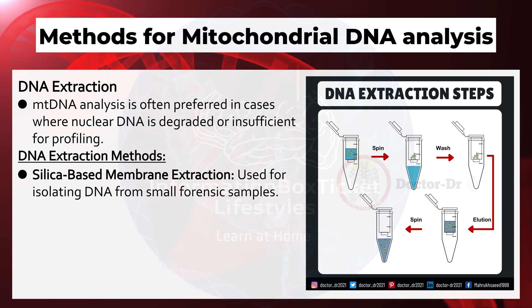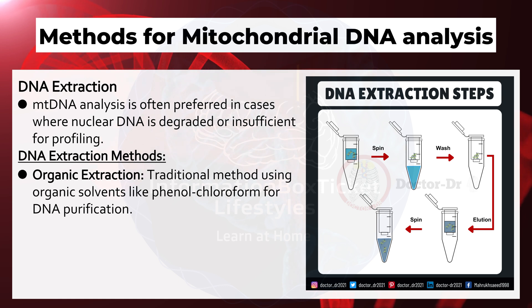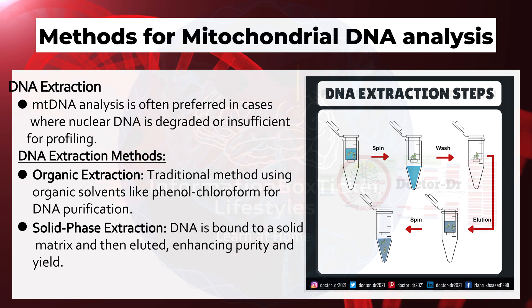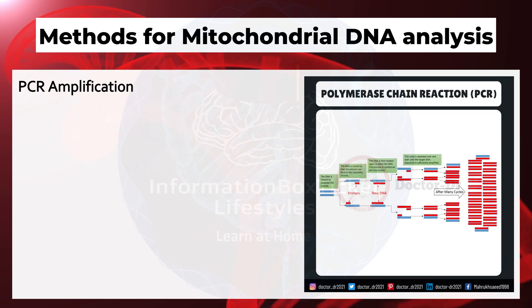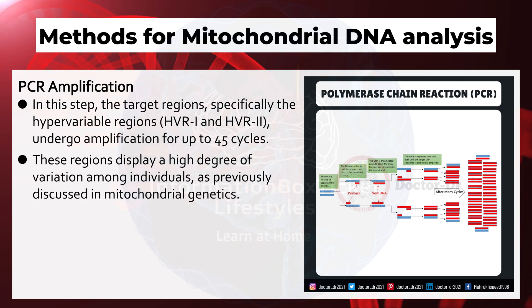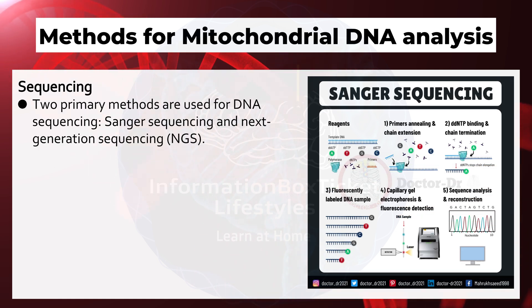DNA extraction methods include: Silica-based membrane extraction, used for isolating DNA from small forensic samples; Chelex extraction, a rapid method for small or degraded samples including hair; Organic extraction, a traditional method using organic solvents like phenol-chloroform for DNA purification; and Solid-phase extraction, where DNA is bound to a solid matrix and then eluted, enhancing purity and yield. In the PCR amplification step, the target hypervariable regions undergo amplification for up to 45 cycles.